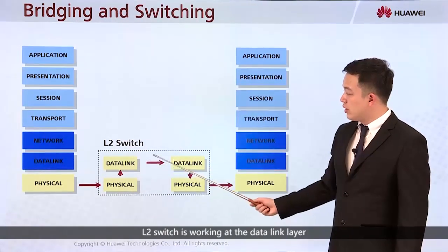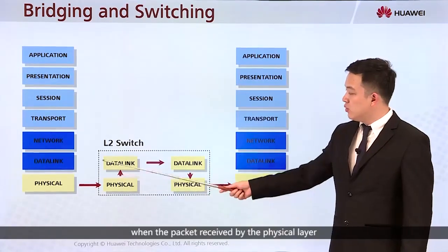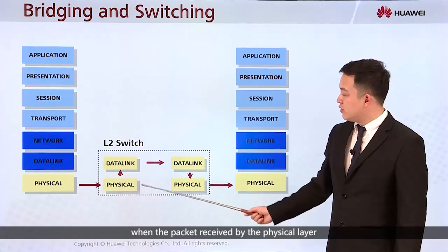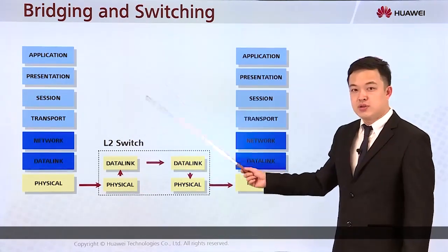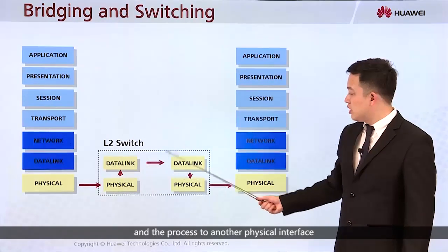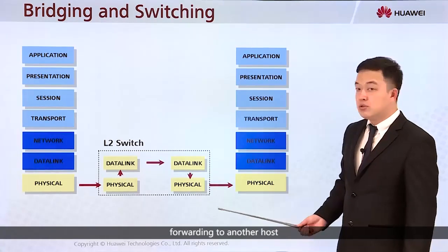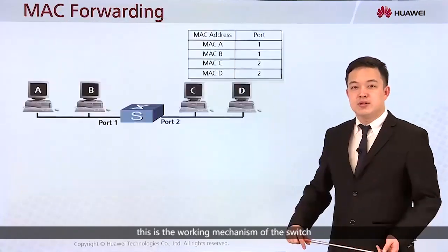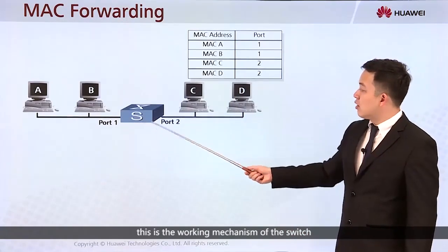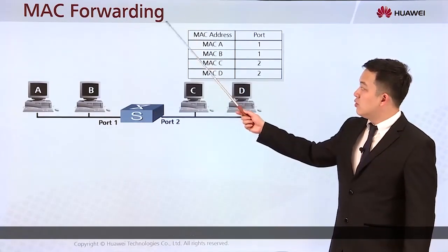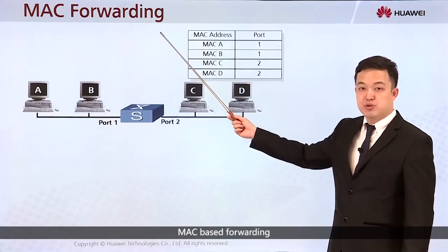An L2 switch works at the data link layer. When a packet is received by the physical layer, it will be processed by the data link layer and forwarded to another physical interface leading to another host. This is the working mechanism of the switch. We call it MAC forwarding, or MAC-based forwarding.